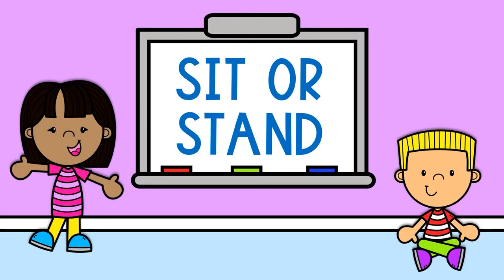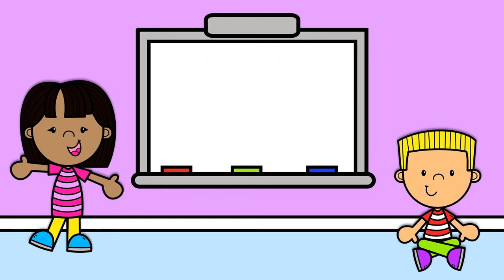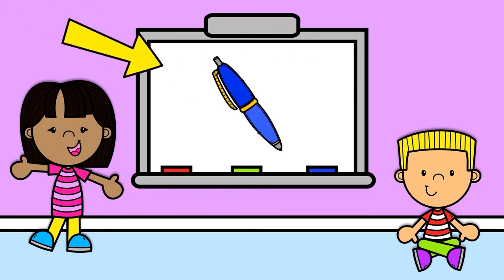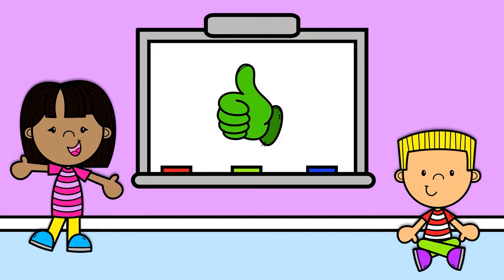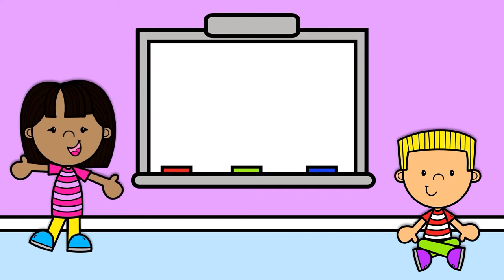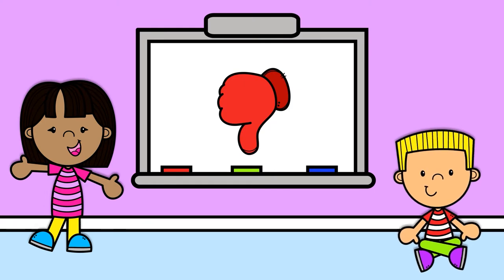Here's how you play Sit or Stand. A picture will appear on the whiteboard. If it has the short U sound, stand up. If it does not have the short U sound, sit down.